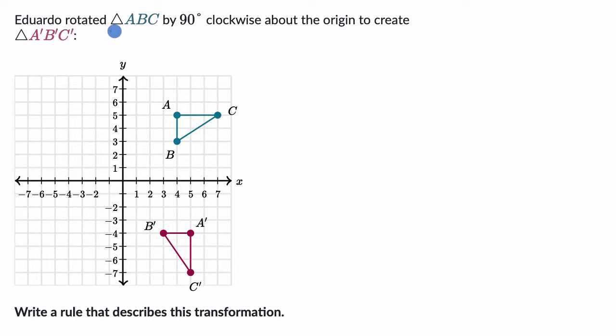We're told that Eduardo rotated triangle ABC by 90 degrees clockwise about the origin to create triangle A prime, B prime, C prime. So what Eduardo did is took this triangle right over here, rotated it 90 degrees clockwise about the origin, which does look right. Write a rule that describes this transformation.